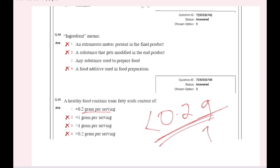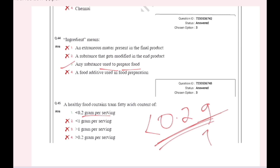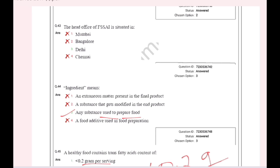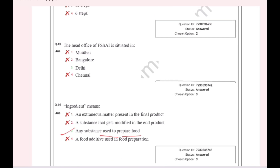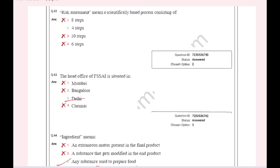Ingredients are defined as any substance used to prepare food. The head office of FSSAI is in Delhi.